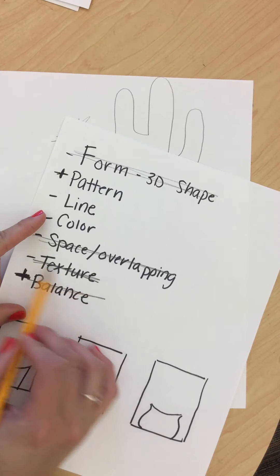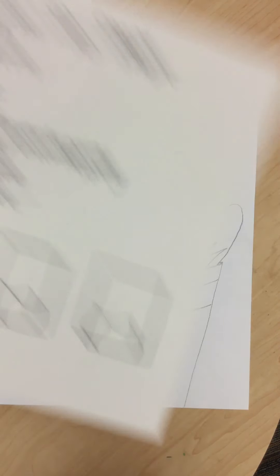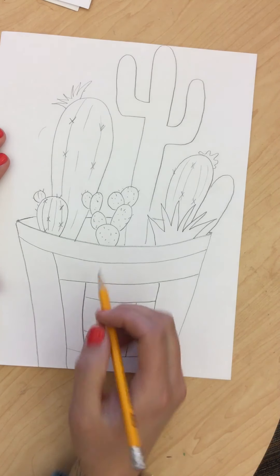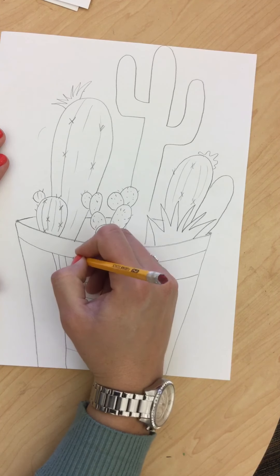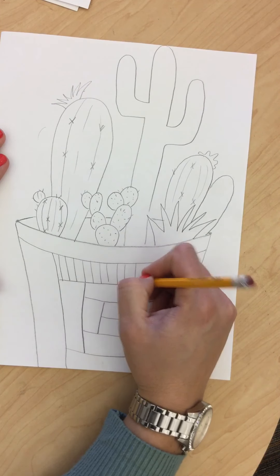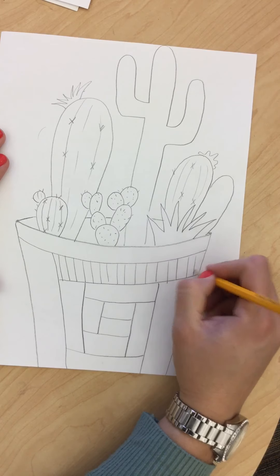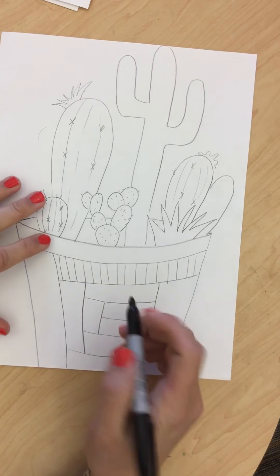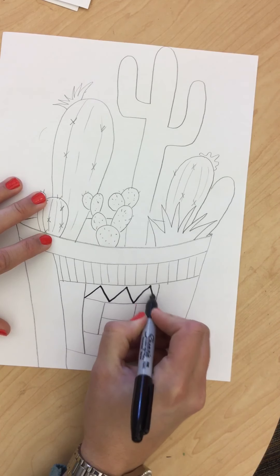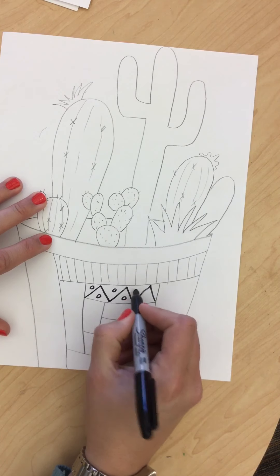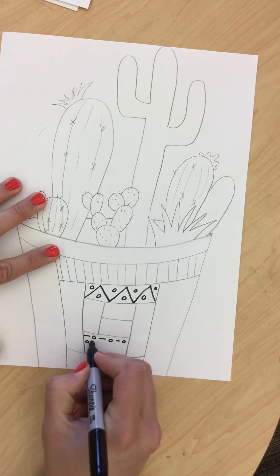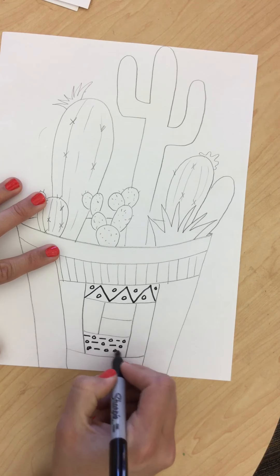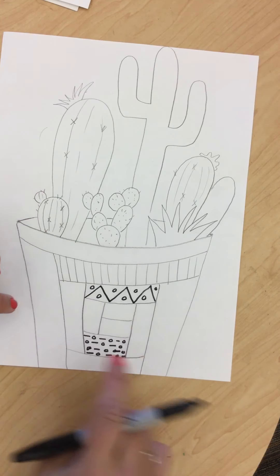After we add all of our texture, then I want to talk about pattern and line. We are going to go in each of these little sections, and we're going to make patterns and lines using lines to make patterns. Maybe this one I want to make straight up and down lines. If you think you're going to go super detailed, you might want to use your Sharpie first. Like, I could switch to my Sharpie. So I don't have to trace it.